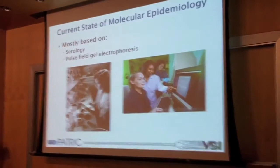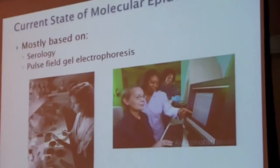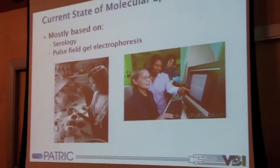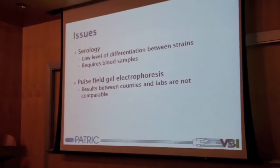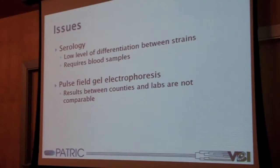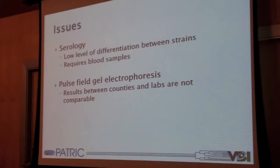At present, the field of infectious disease molecular epidemiology, as practiced in health departments across the U.S., is mostly based on older lab diagnostic techniques and analysis, such as serology and pulse field gel electrophoresis. These techniques don't supply very high-resolution data on individual strains compared to whole genome sequences. Serology requires blood samples, which you may not have access to. And pulse field gel electrophoresis results are only comparable within an individual laboratory or extensively standardized networked labs, such as PulseNet — results which cannot be compared to anything outside of PulseNet, making it not great for international outbreaks or non-PulseNet labs.